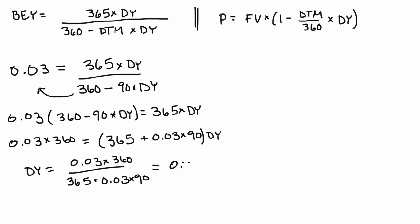which turns out to be, all right, so we figured out that the discount yield is 2.94%. So now we have to figure out the price of the t-bill.